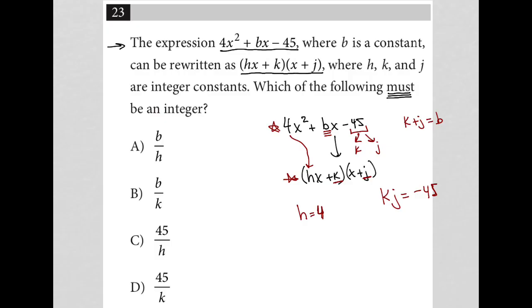So let's see, what do I know? b over h. I don't know what b is. All I know about b is that it's k + j. And h, I know, is 4. So I'm not sure if that's going to be an integer or not.